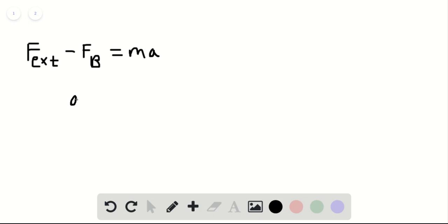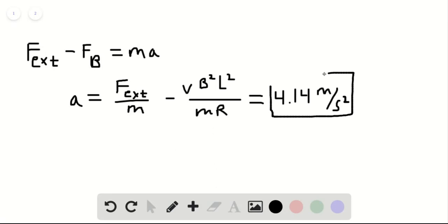Acceleration is what we're trying to find here. Acceleration is equal to F external divided by the mass minus V times B squared times L squared divided by the mass times the resistance. Plugging all those values into the equation, we find that the acceleration is equal to 4.14 meters per second squared. We can box that in as our solution for part A.